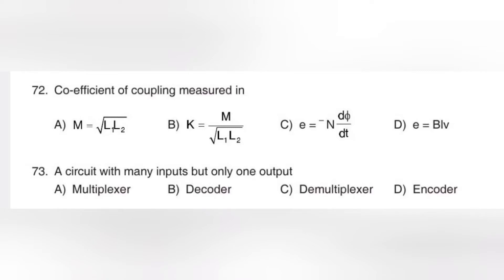The encoder is called a decoder in reverse. A decoder converts binary to the previous side of the input. The input can be alphabets, symbols, numerals, etc. We convert the inputs using the decoder.